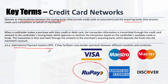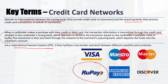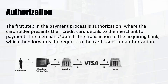When a cardholder makes a purchase with a credit or debit card, the transaction information is transmitted via the credit card network from the acquirer to the issuer bank. The issuer is going to approve or decline the transaction based on multiple parameters which we will see shortly.